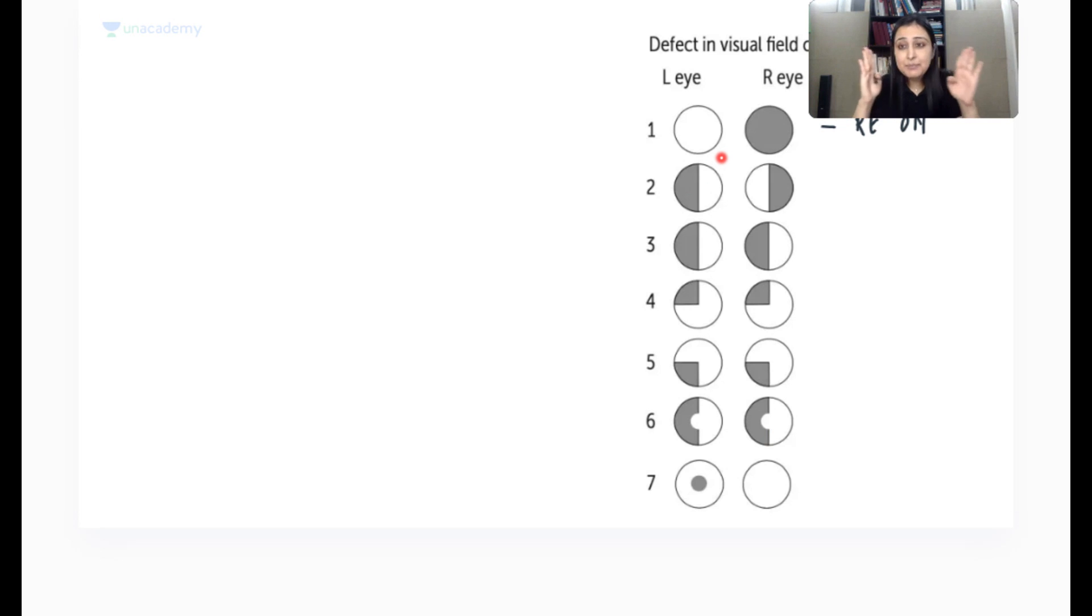When I see something like this, this is typical bitemporal hemianopia. So when I see heteronymous hemianopia, means alag alag side ka. So this typical descriptor is heteronymous hemianopia. And this is bitemporal. So bitemporal hemianopia means optic chiasma, right? No questions asked. Easiest. So this is optic chiasma. Here, what will they give you? Why optic chiasma? Because optic chiasma, bilateral nasal fibers cross.